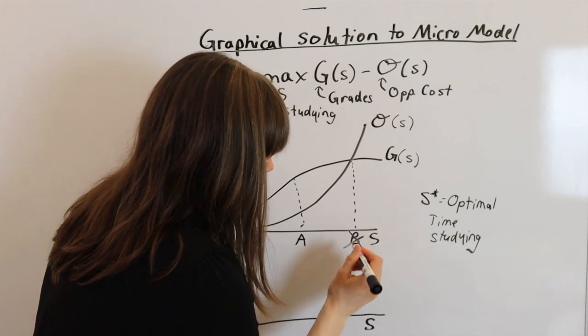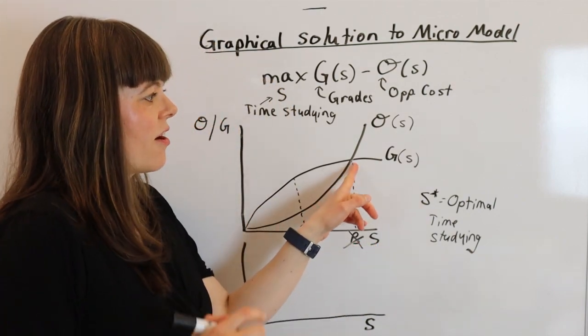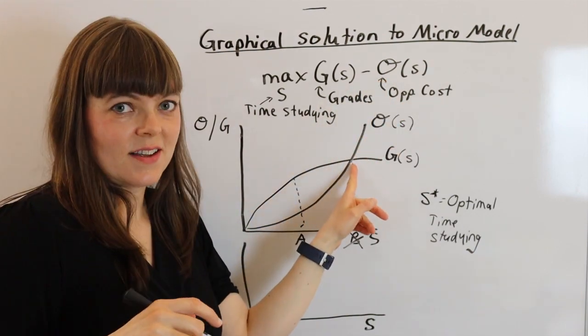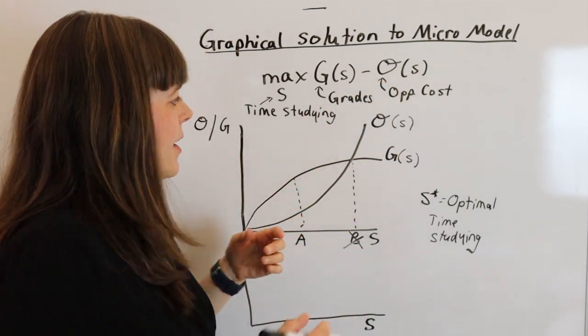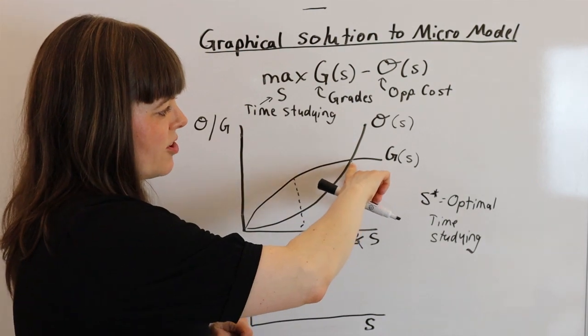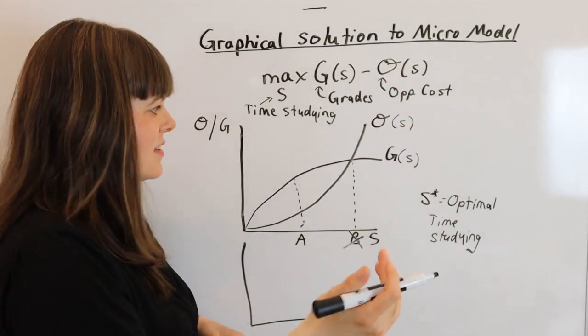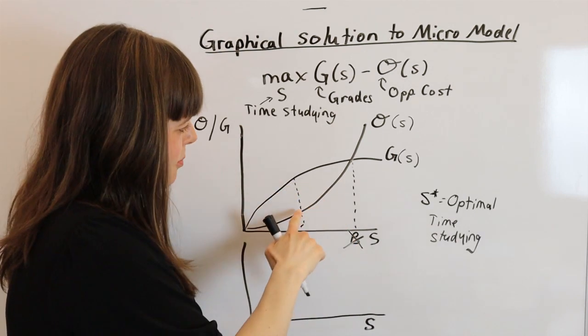Why is that not the right solution? Well, what is the actual value of grades minus opportunity cost at this point? It's zero. The difference between grades and opportunity cost is zero where these cross. This exactly equals that. That makes it zero. If we look at this point, however,